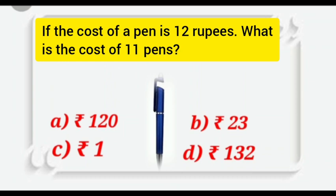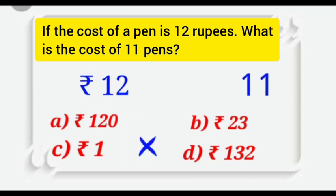Kids, you all know it very well. When we know the cost of 1 thing, and we have to find out the cost of more than 1 thing, we use multiplication. Here, we will multiply the cost of 1 pen with the number of pens we have to buy. Rupees 12 multiplied by 11.